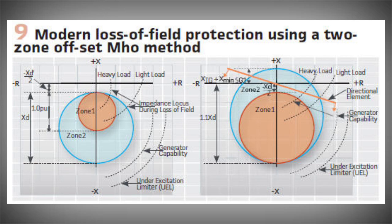First, the apparent impedance is calculated. In real time, the positive sequence impedance is monitored. The current and voltage are measured in real time, and the positive sequence impedance is measured. Once the current and voltage are measured, the impedance value is calculated. Then, the relay determines if under-excitation has occurred.